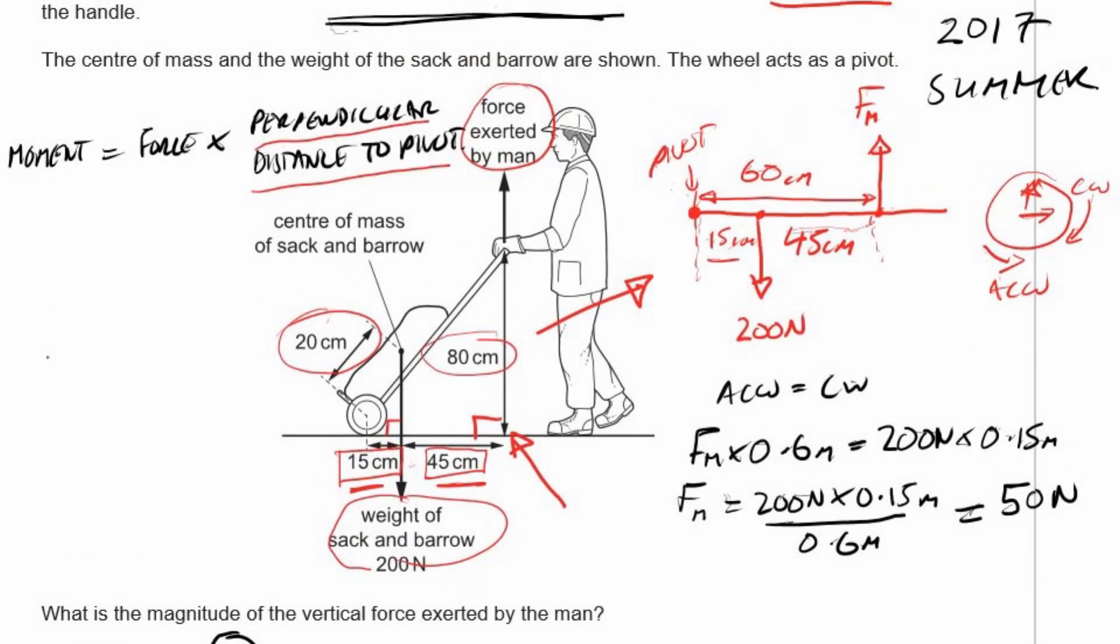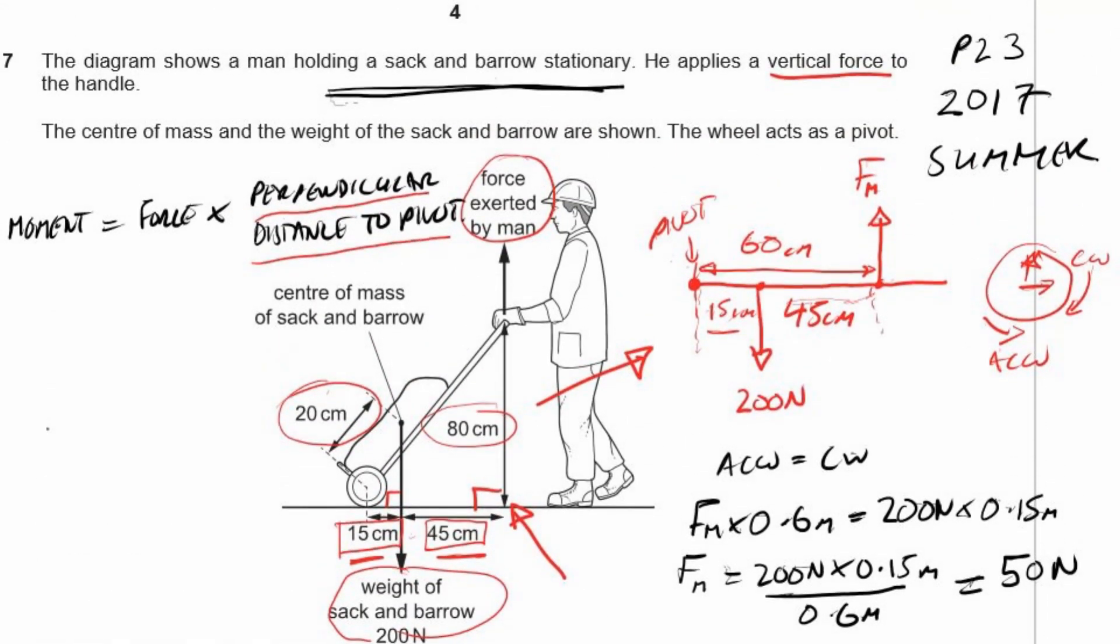A tricky question. A tricky question where everything you need to know to remember is contained in here. The moment equals force times perpendicular distance to the pivot. Which, as I said in the last video, is something that almost never comes up. Well, CIE has proved me to be almost always right there, because here it has come up.